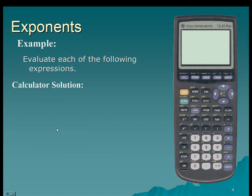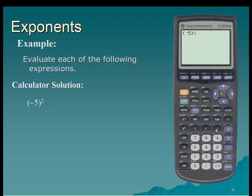Let's take a look at the calculator solution for negative 5 quantity squared. I'll use a begin parenthesis, enter negative 5, and close the parenthesis. To enter the exponent, I'm going to use my caret and raise it to the 2nd power, for a result of positive 25.